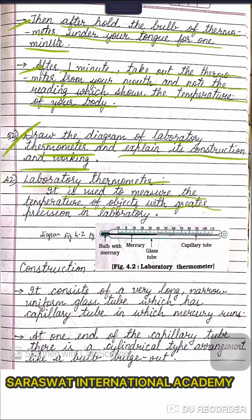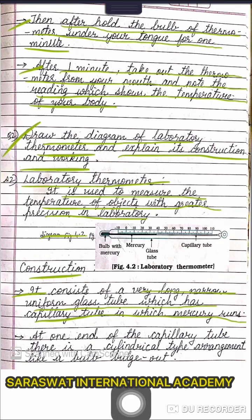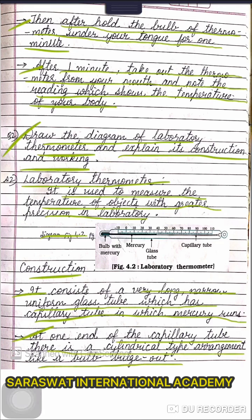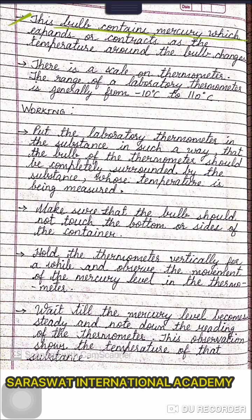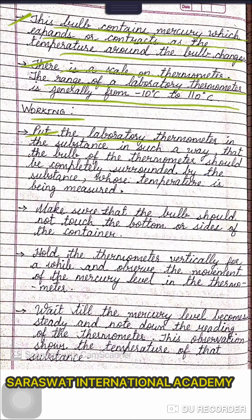Question number two: draw the diagram of laboratory thermometer and explain its construction and working. Laboratory thermometer is used to measure the temperature of objects with greater precision in a laboratory. Construction: it consists of a very long, narrow, uniform glass tube with a capillary tube in which mercury runs. At one end of the capillary tube there is a cylindrical bulb. This bulb contains mercury which expands or contracts as the temperature around it changes. The range of a laboratory thermometer is generally from −10°C to 110°C.